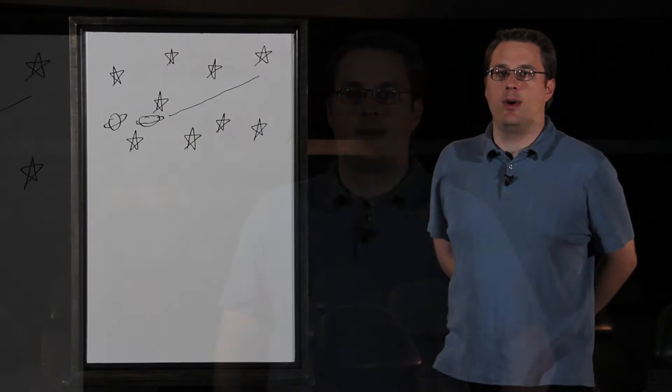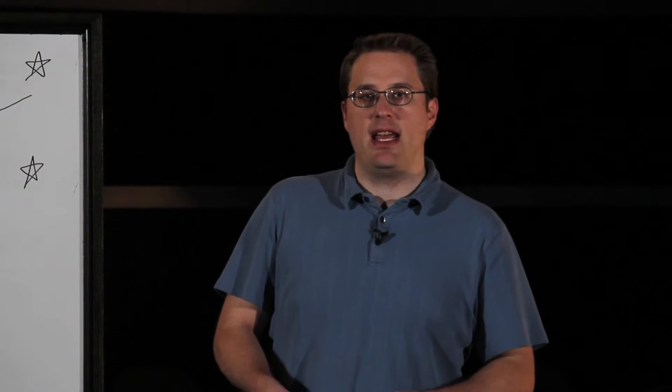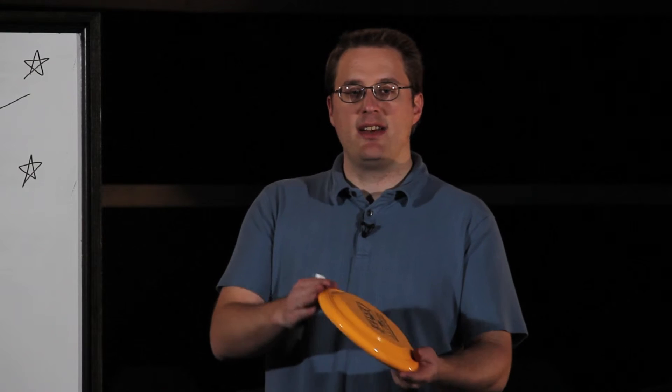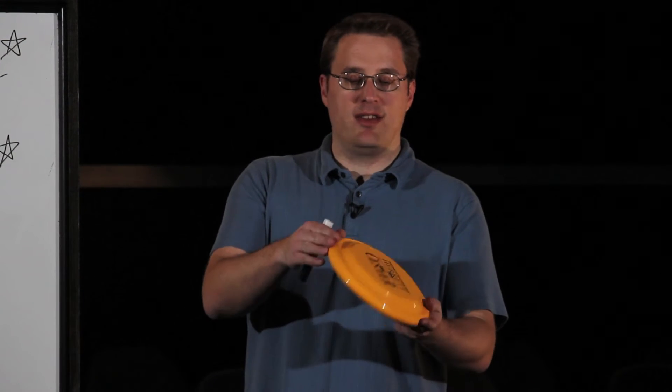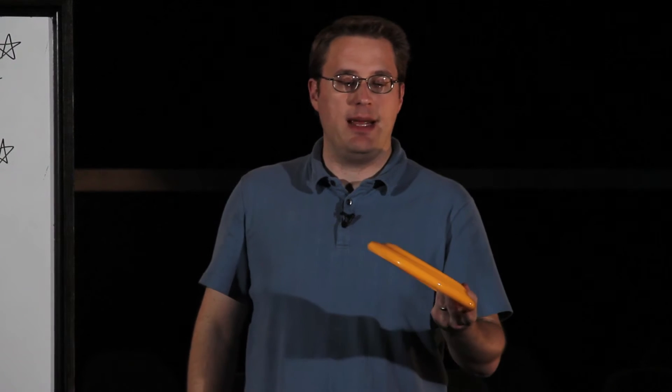We can look at Saturn today and its tilt as it goes around the Sun. Saturn's tilted about like Earth is. Earth's twenty-three and a half degrees as its North Pole is pointed towards the North Star as it goes around the Sun. Saturn is about the same, about twenty-seven degrees, and so Saturn tilts as it goes around the Sun.